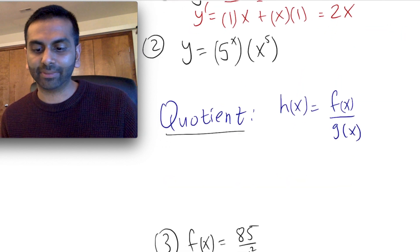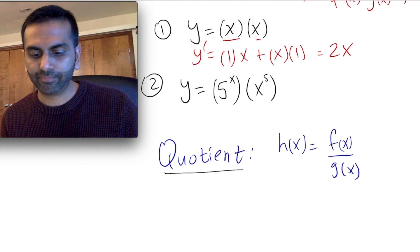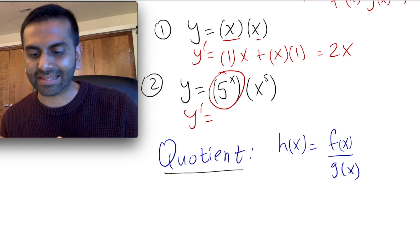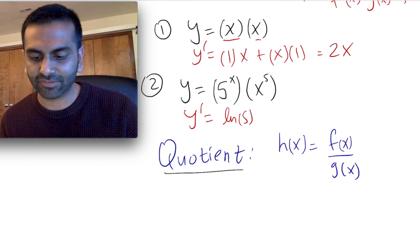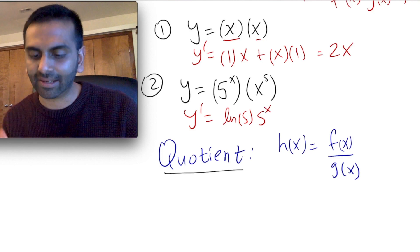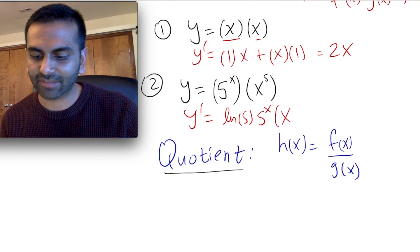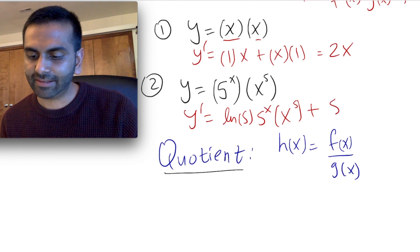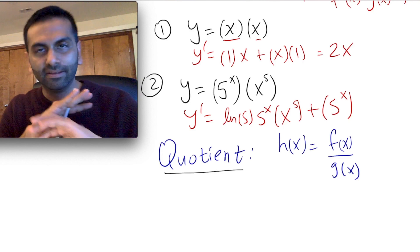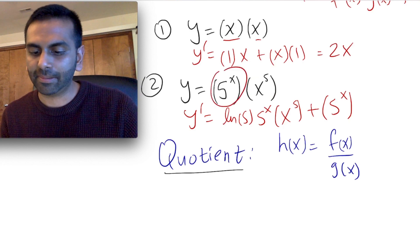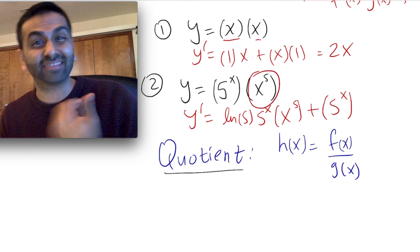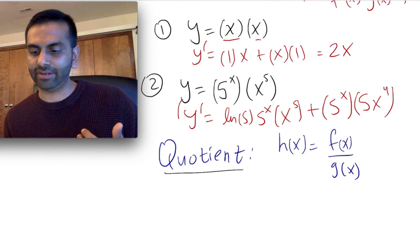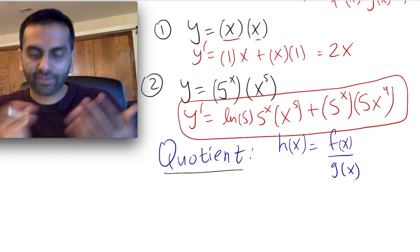Now, here we can't really check our answer, but we can apply the product rule to 5 to the x times x to the fifth. The derivative of the first guy: the derivative of 5 to the x is ln of 5 times 5 to the x. Now take a breather and just copy the second guy as is, times x to the fifth, plus — copy this first guy as is, 5 to the x — and now finally take the derivative of the second guy, which is 5x to the fourth. And overall, that expression is the derivative.